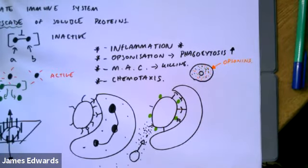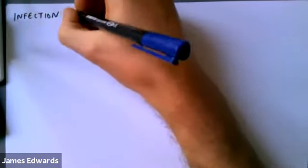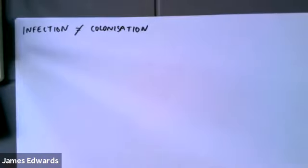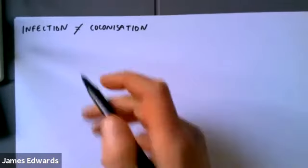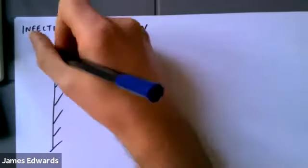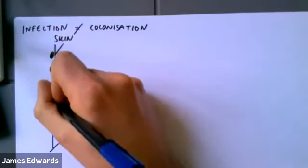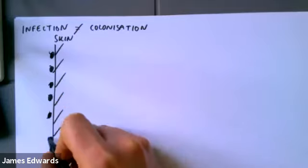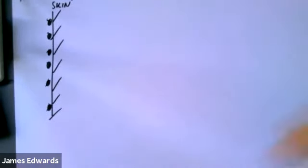In that first part we went through what complement is and what it does. Now let's go through an infection. One of the most important messages in microbiology, certainly in year one, is that infection does not equal colonization. Here we have an innate barrier — for the purposes of this argument we'll say this is skin. Over the surface we've got a pathogen: it's colonized, it's living, it's not doing anything harmful, it's just living its life.